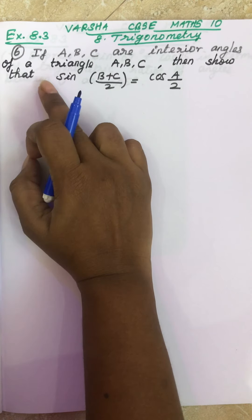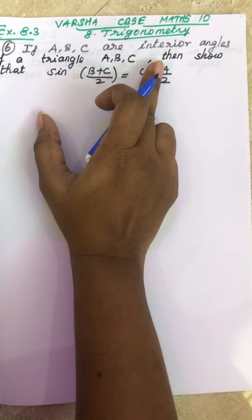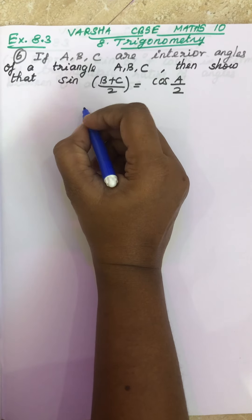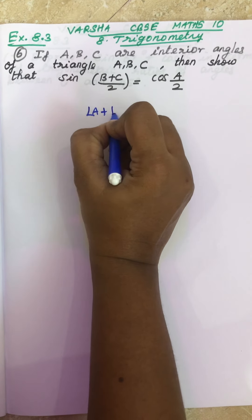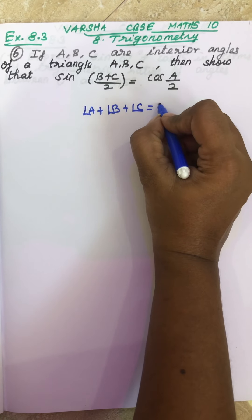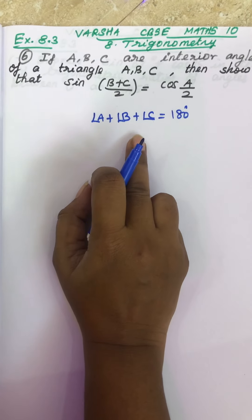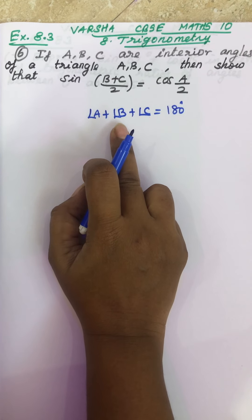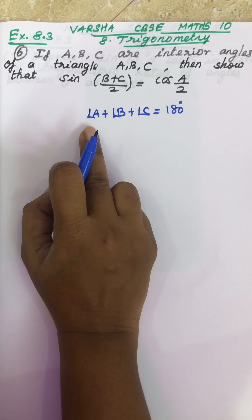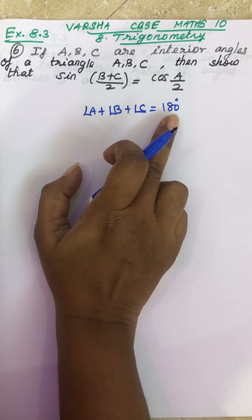ABC are interior angles of a triangle. Interior angles means the sum of all three angles. The sum of three angles of any triangle will be 180 degrees. This is the very main first property of a triangle.